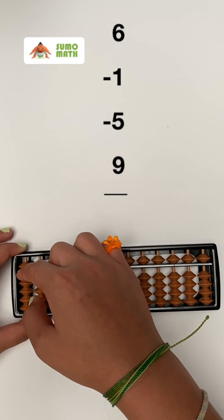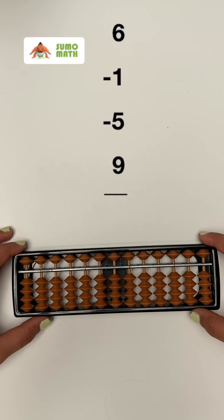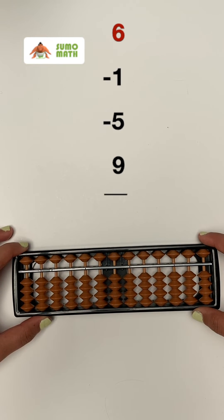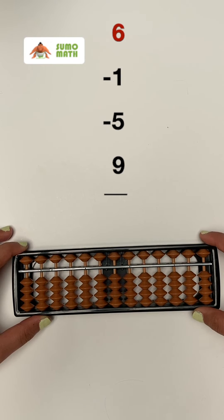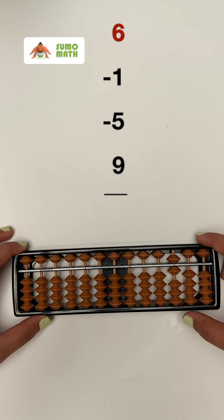Clear your abacus and add six by pinching the top five bead and one lower bead to the bar with both your thumb and index finger.